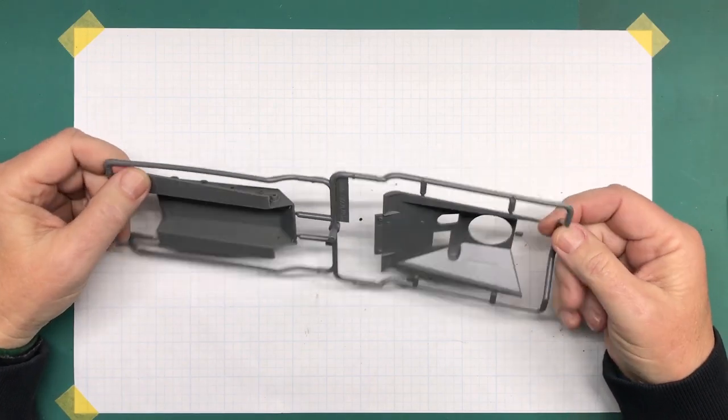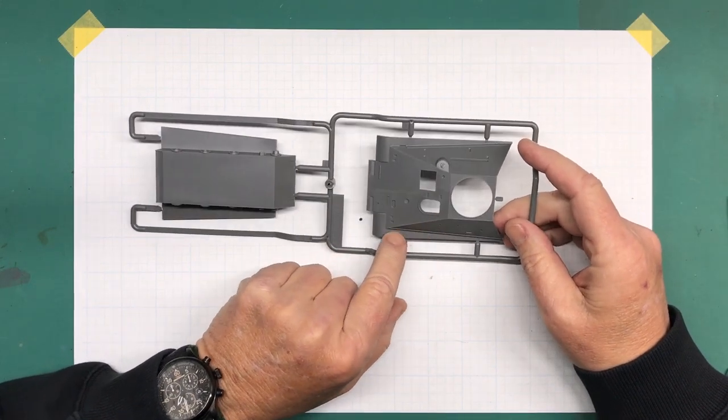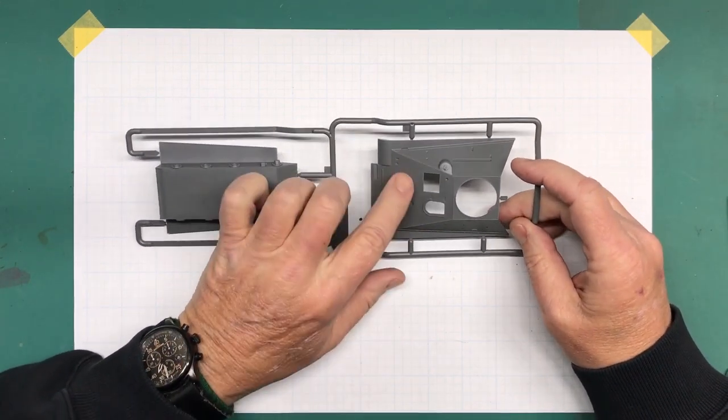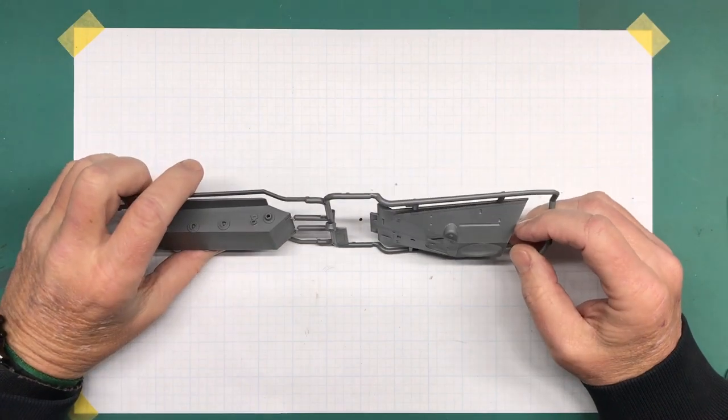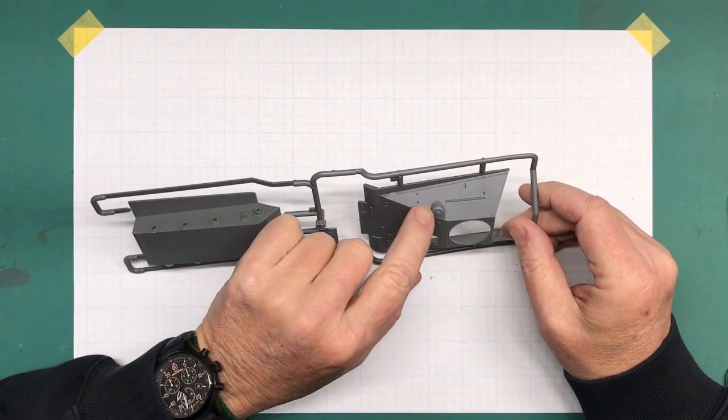Molding looks really good, no flash. Detail looks really nice. Raised bolt detail there, a little bit of texture. Nice weld seams all the way around. Not much to say there. It all looks good. That is Sprue A.